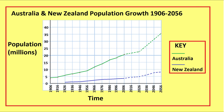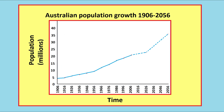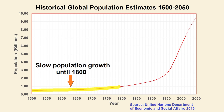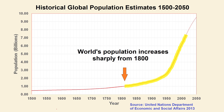Changes in population are best represented using a line graph. For example, this graph shows population change over time in Australia. On a global scale, the world's population will grow simply if the birth rate is greater than the death rate. Until the 19th century, the world's population grew slowly, but since the Industrial Revolution there has been an explosion in the growth of the world's population, as can be seen from this line graph.